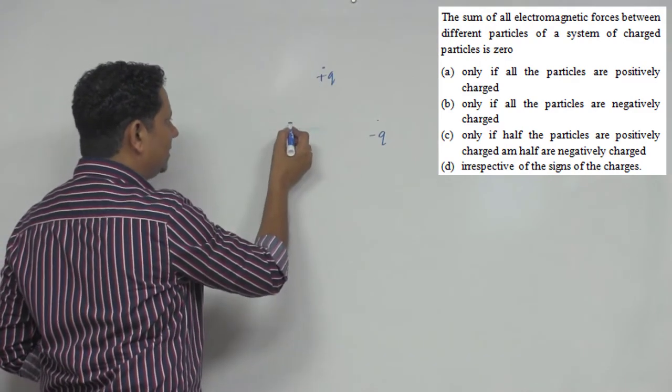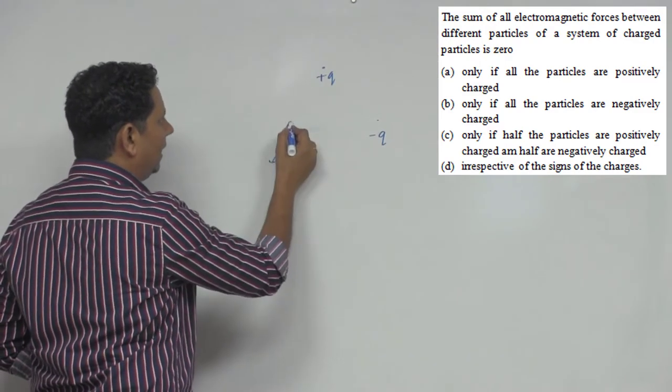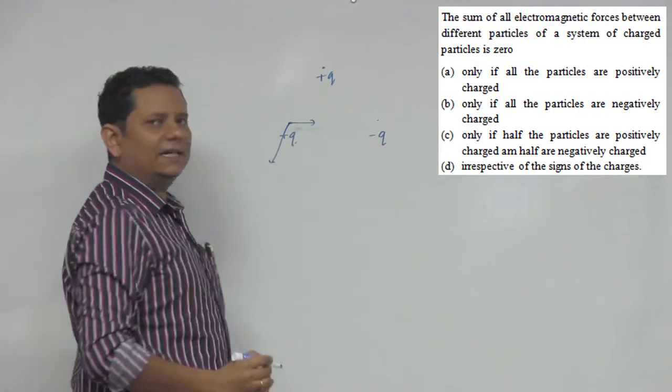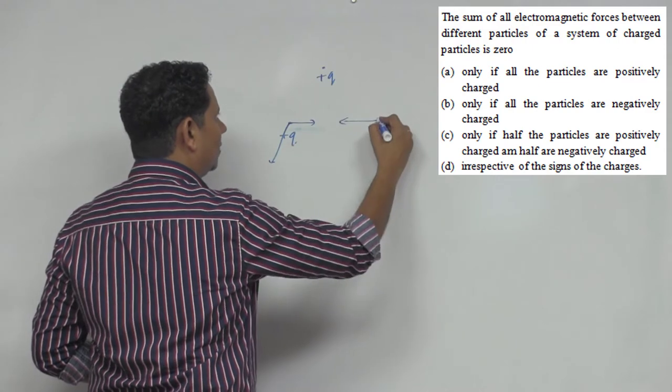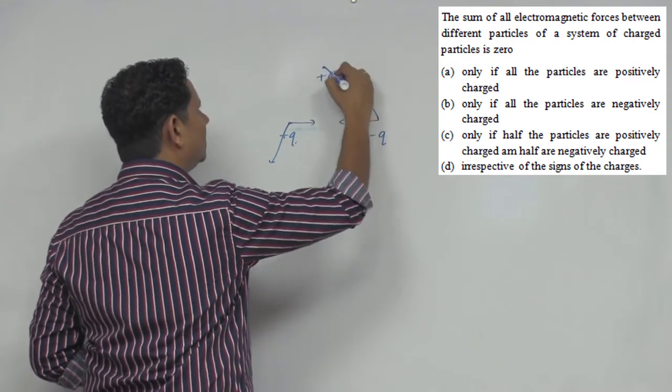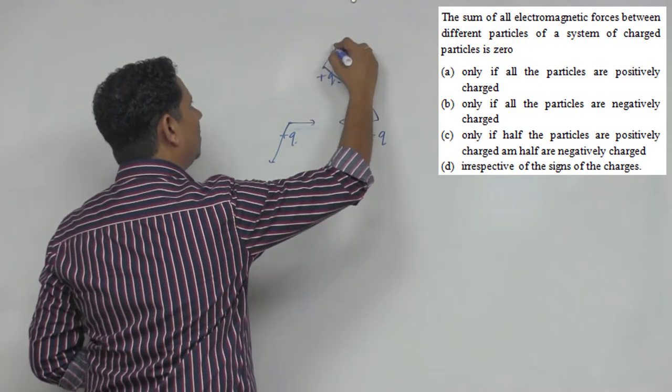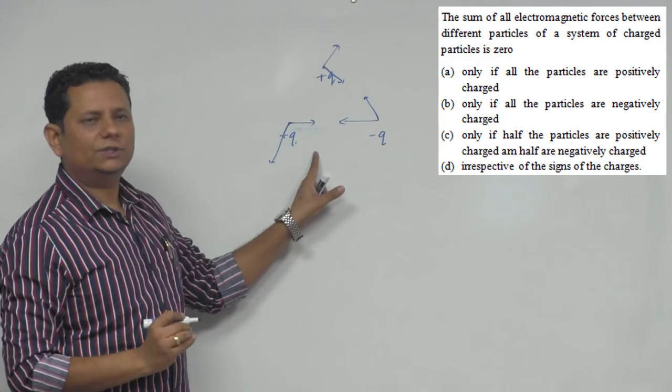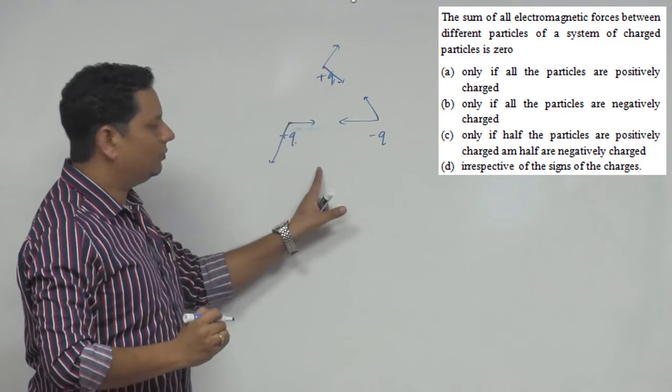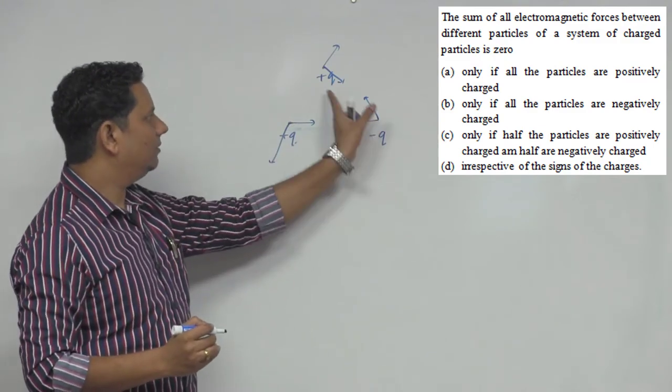This force is repulsive force in the direction of this force. This attractive force is in the direction of this force, or similarly attractive force is there, or repulsive force is there. In vector form I write the net resultant force is here, the resultant force is all in this case.